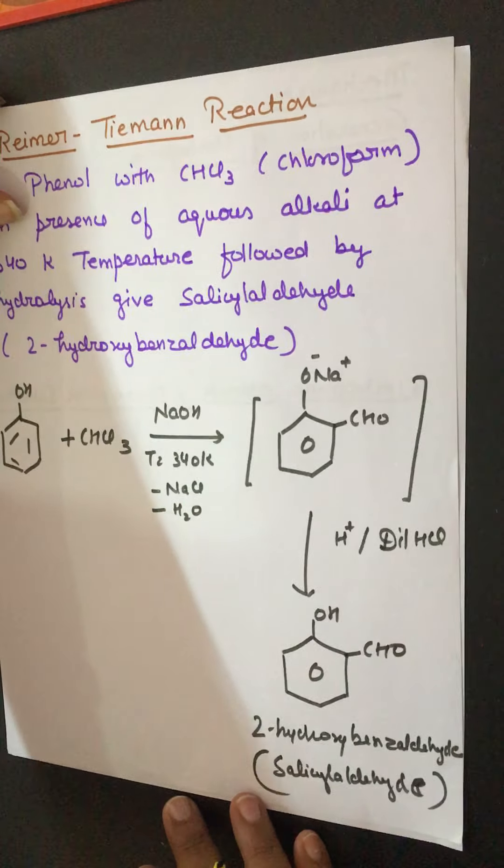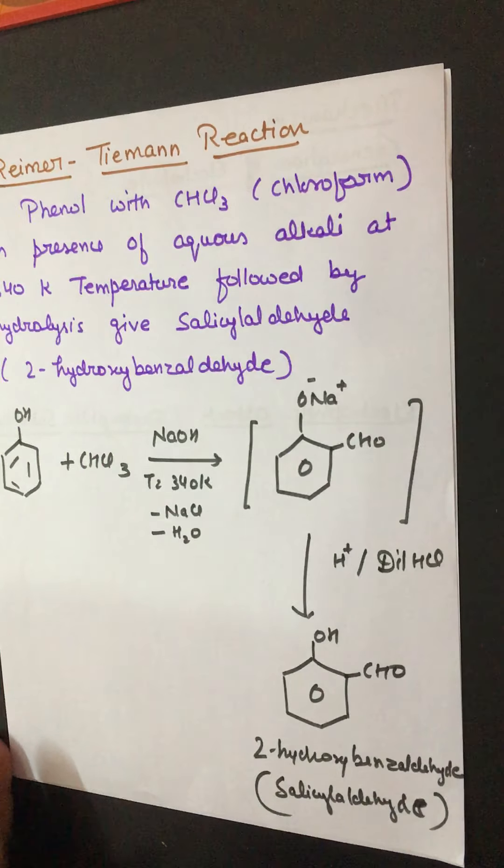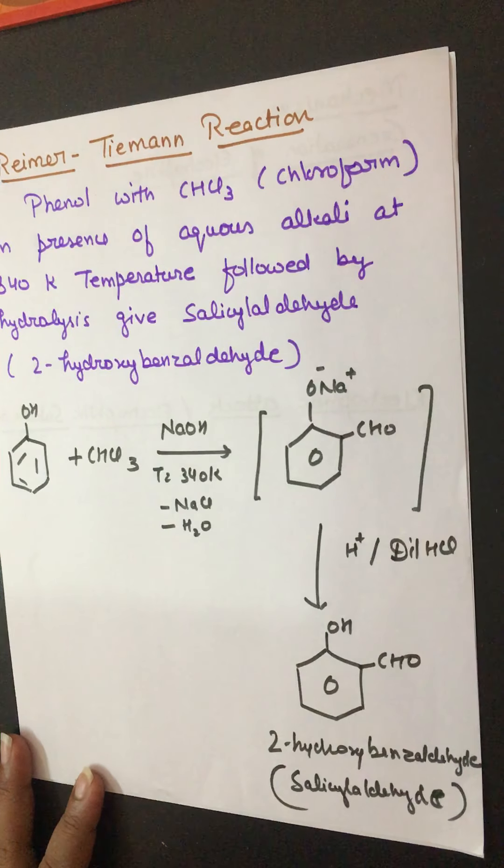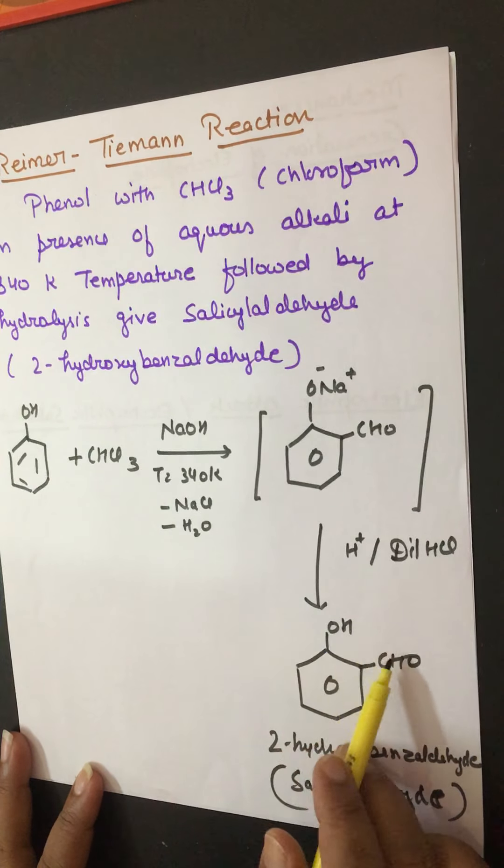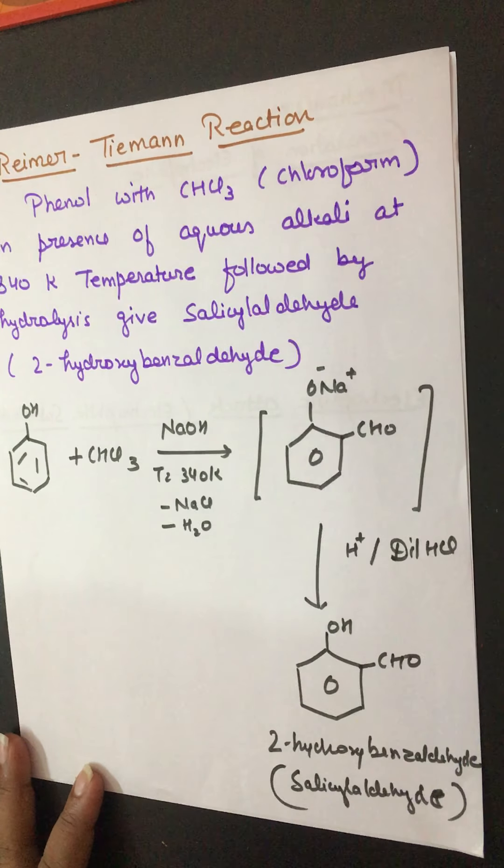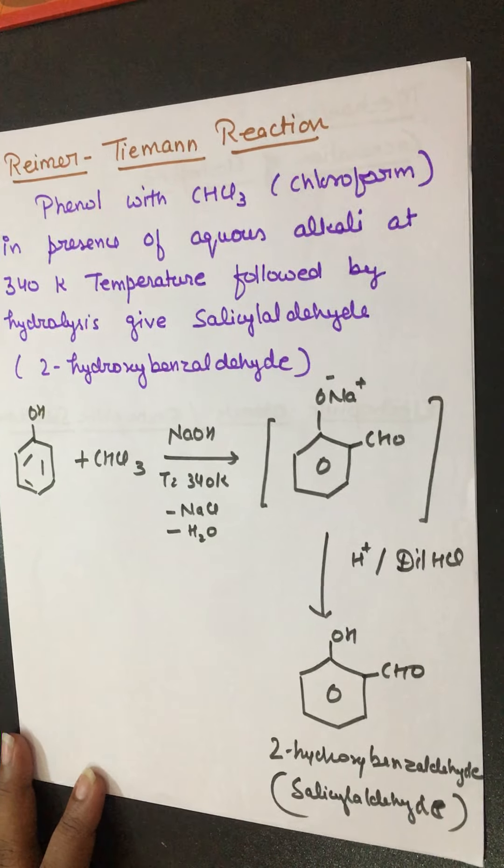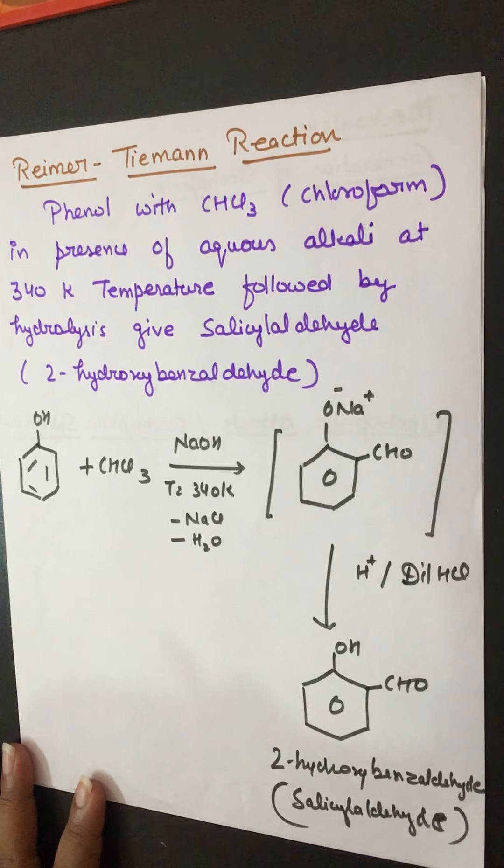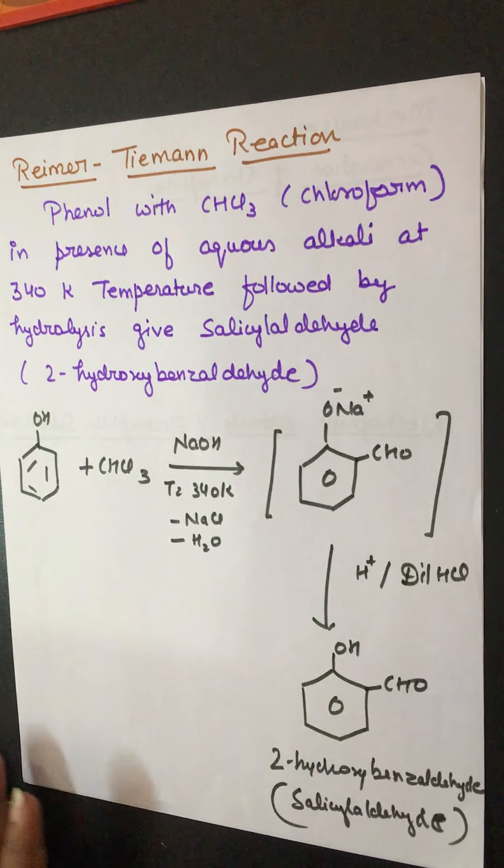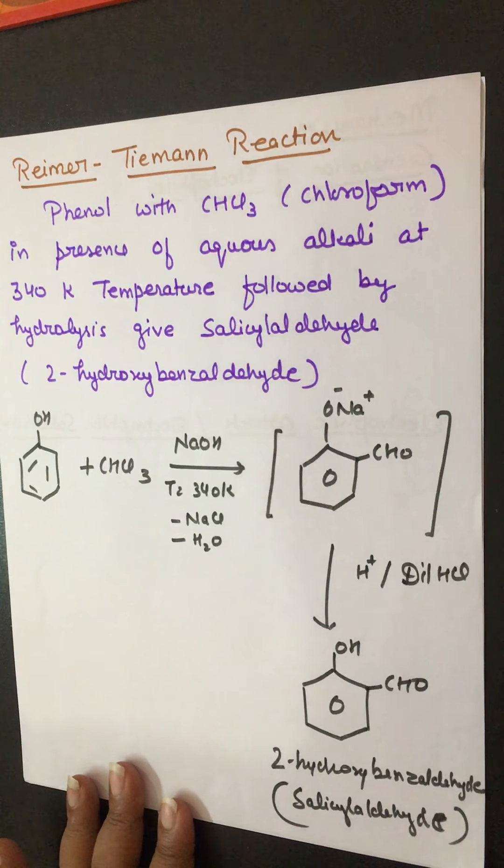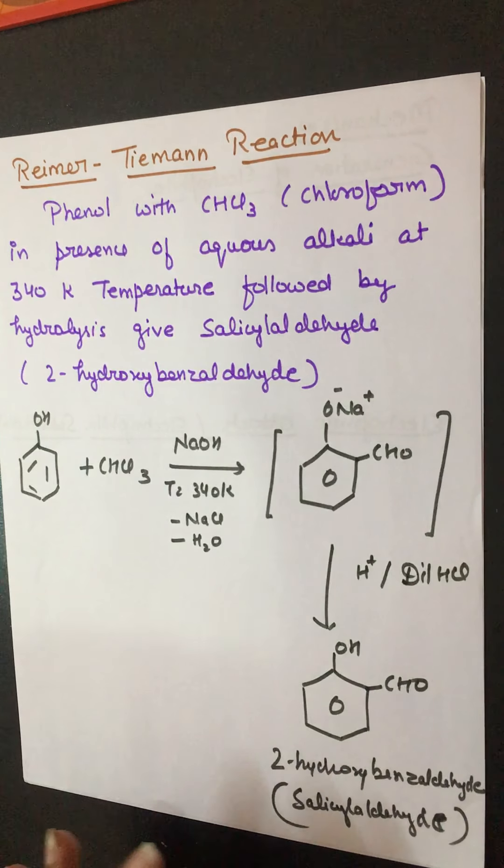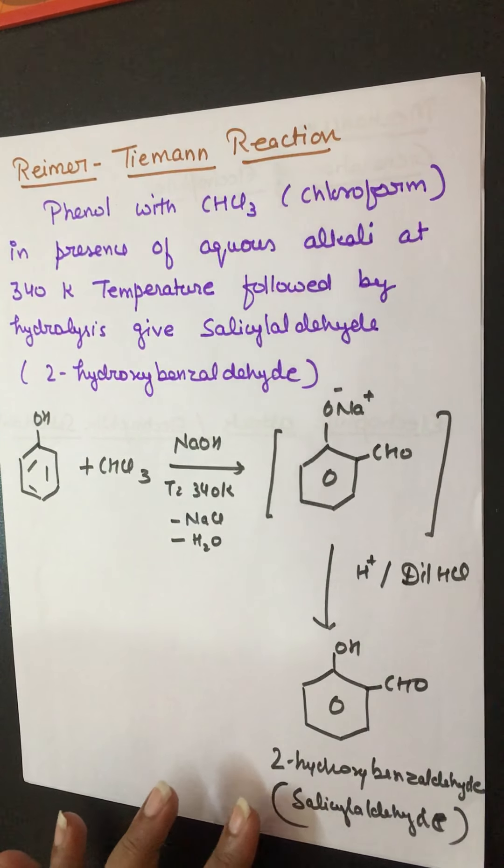In this case, 4-hydroxybenzaldehyde is also formed, but 2-hydroxybenzaldehyde is the major product. It is due to intramolecular hydrogen bonding between the two groups, OH and CHO group. Intramolecular hydrogen bonding takes place, so it is the major one and 4-hydroxybenzaldehyde is the minor one.